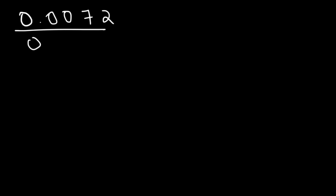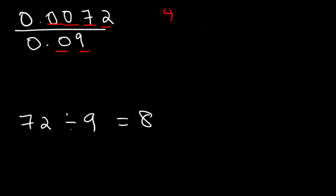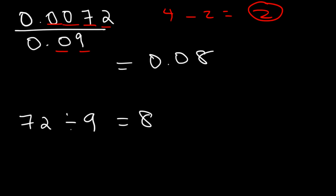Now, what about dividing two numbers? What are the rules for this situation? Well, we know that 72 divided by 9 is 8, because 8 times 9 is 72. But what is 0.0072 divided by 0.09? When multiplying decimal numbers, you need to add the digits. When dividing decimal numbers, you need to subtract the digits. Looking at the top number, there are four digits, and the bottom number has 2. 4 minus 2 is equal to 2, so your final answer should contain two digits. Since 72 divided by 9 is 8, 0.0072 divided by 0.09 is going to be 0.08, which has two digits to the right of the decimal.